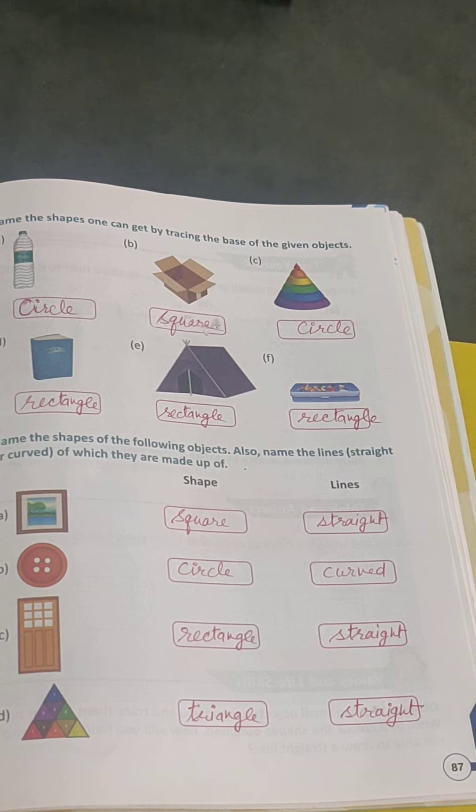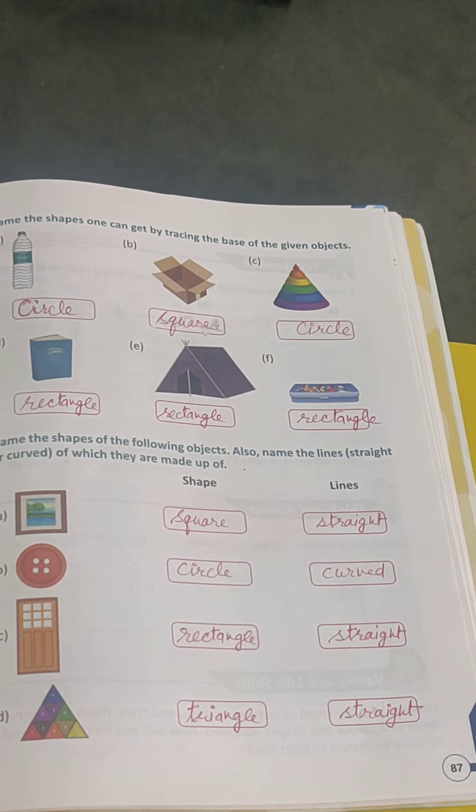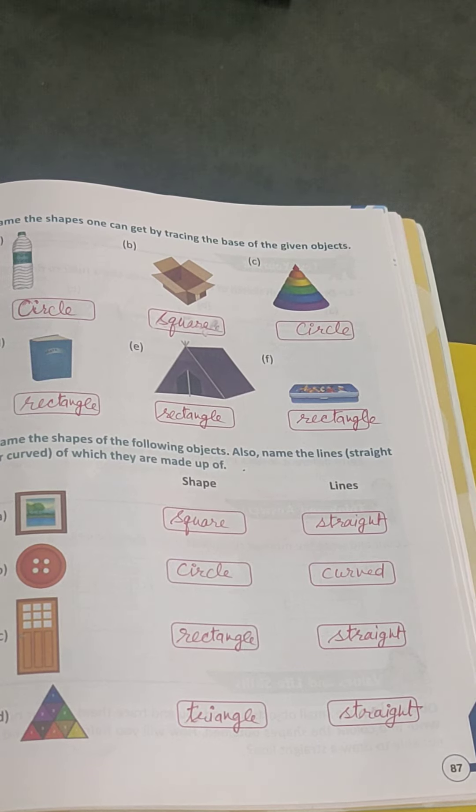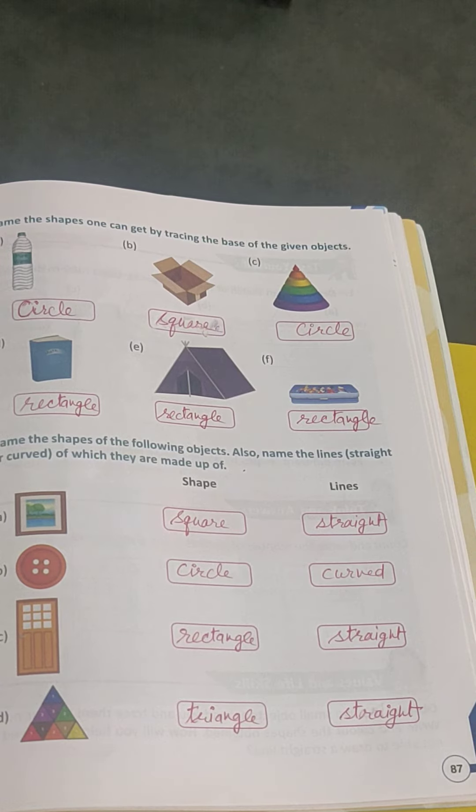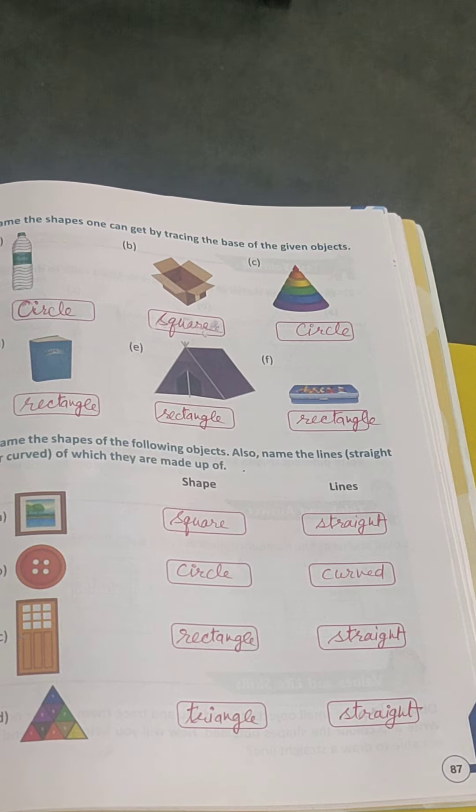Question 6. Name the shapes of the following objects and name the lines, straight or curved, of which they are made up of. Number 1. Picture. Shape: square. Lines: straight.